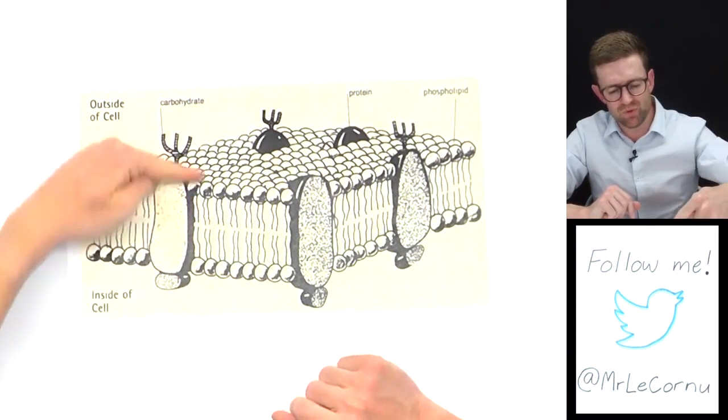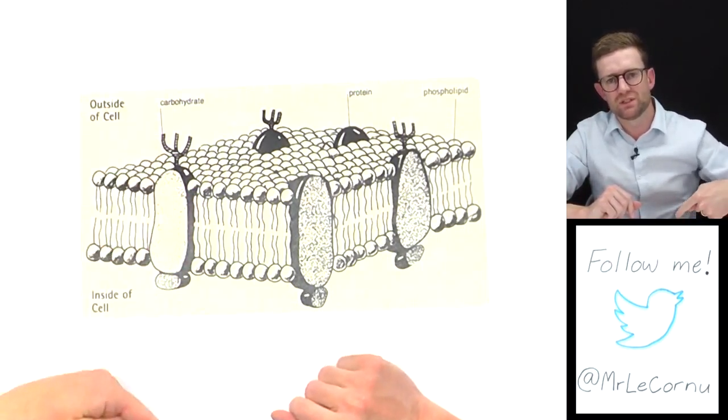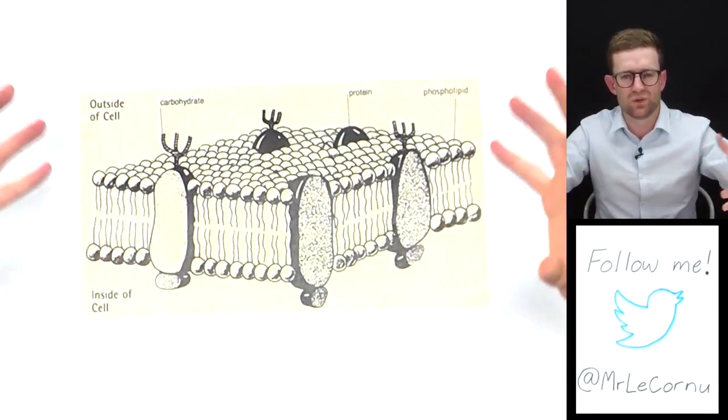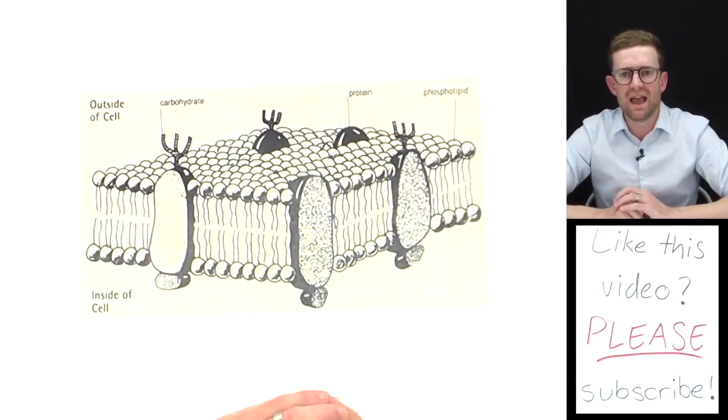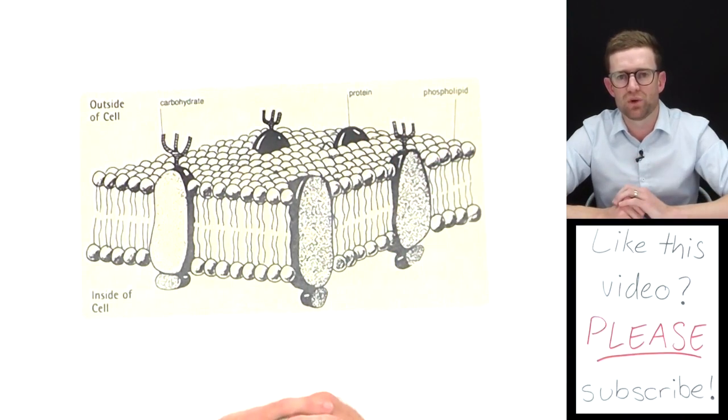It's important for things to be able to move across that cell membrane so the cell can bring in things it needs and move out things it doesn't need. Active transport is one of the processes in which cells do that.